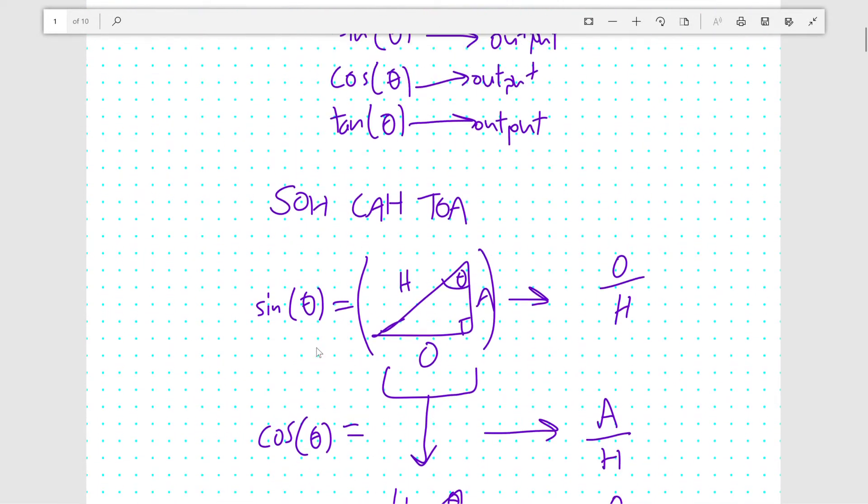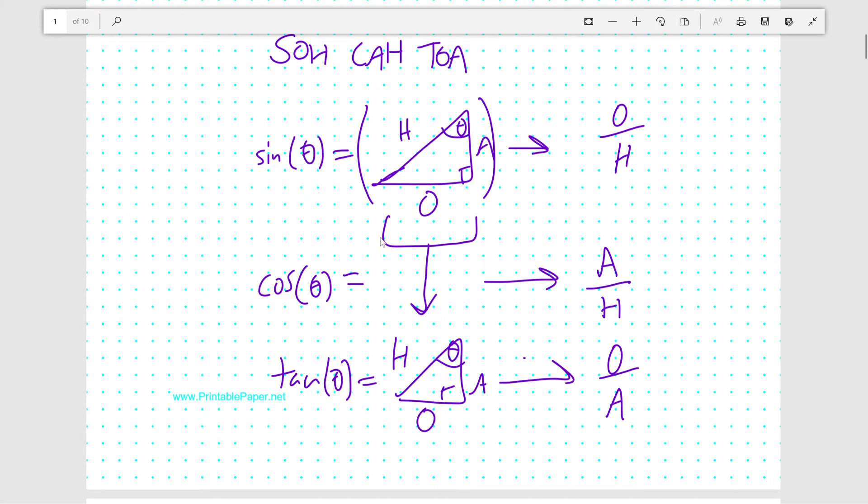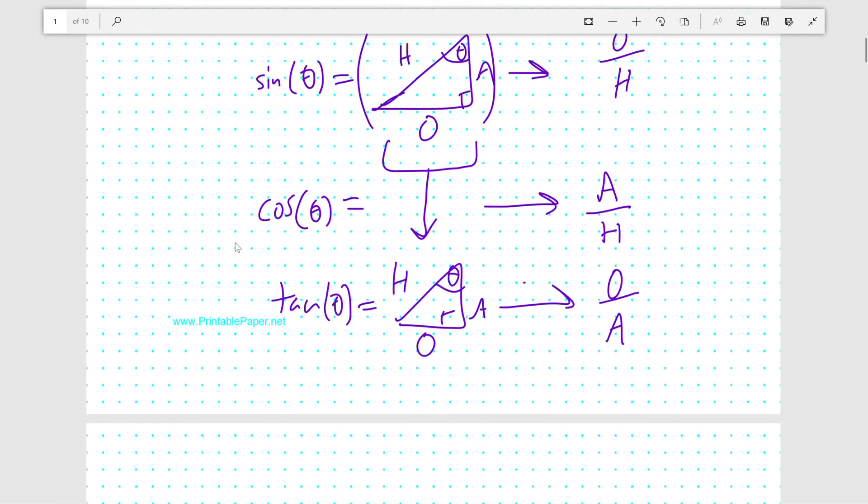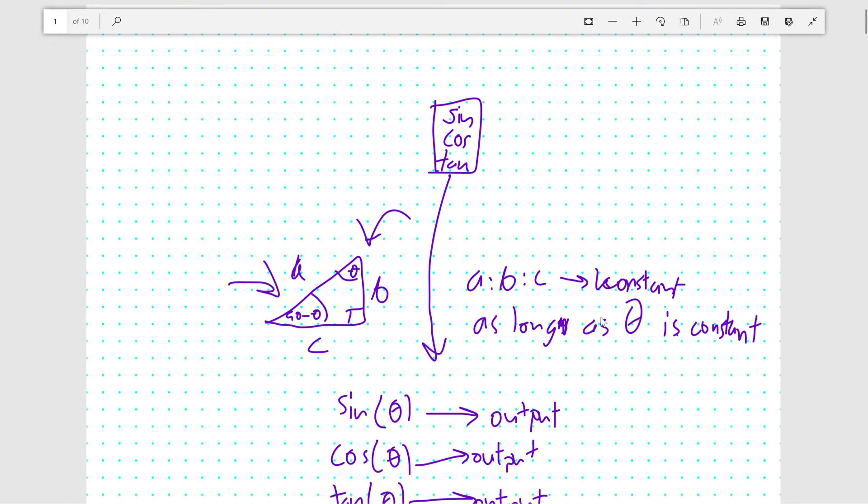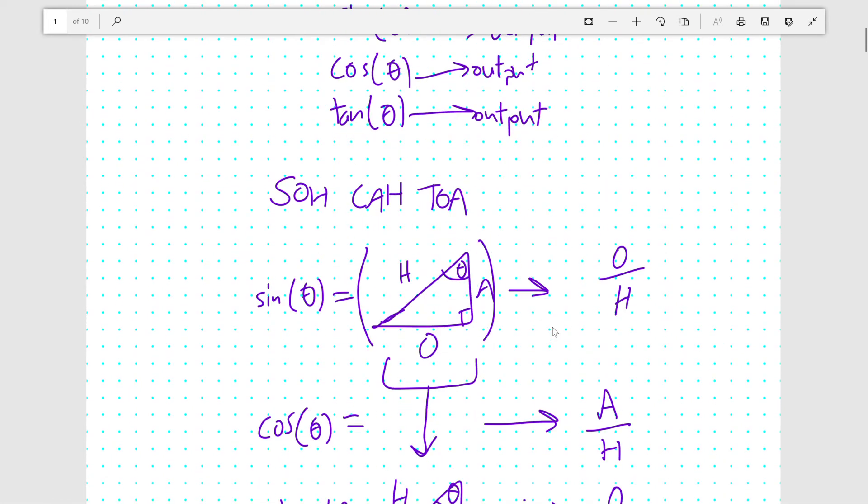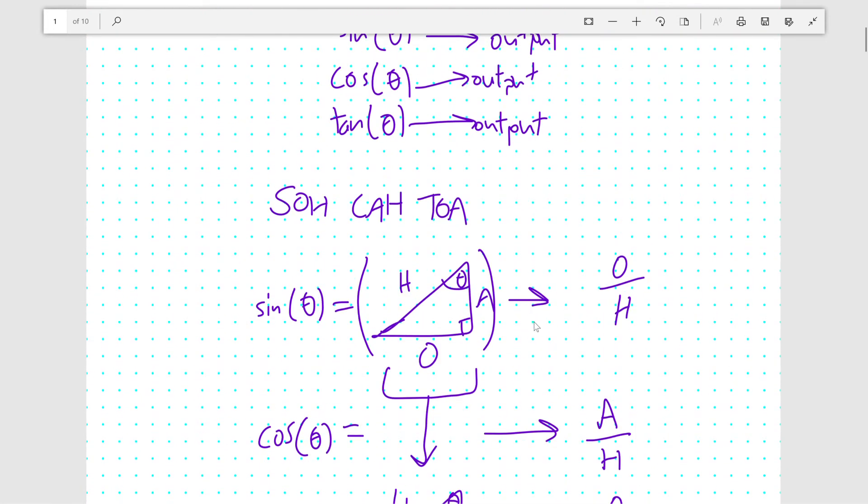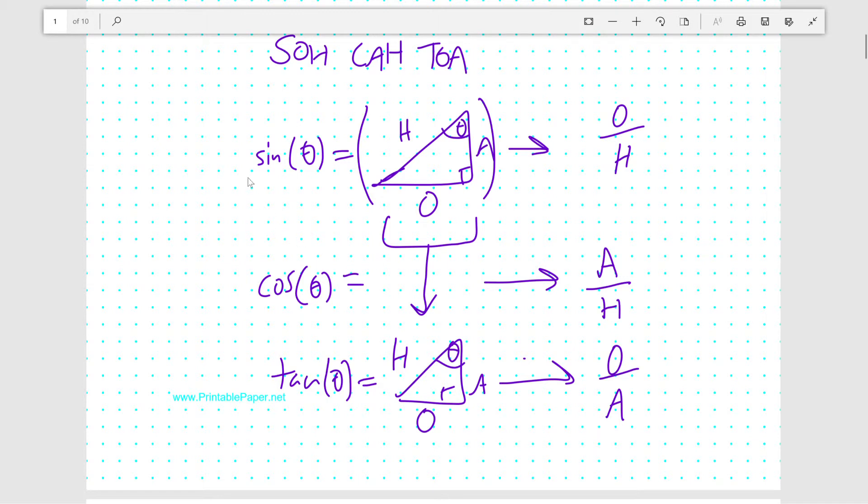So since these act like functions, for the same value of theta, no matter what the sides of the triangle, they'll always give you the same result. Like sine of 30 degrees or whatever is always going to be 1 over 2. That's just the way it works. And I hope this was helpful to you, and we can do a lot of things with these sine, cosine, and tangent. For example, we can find any side that we want if we know one side length and one angle.